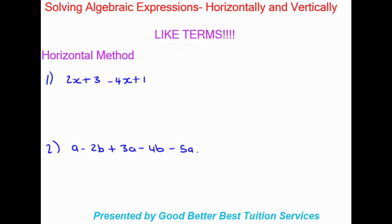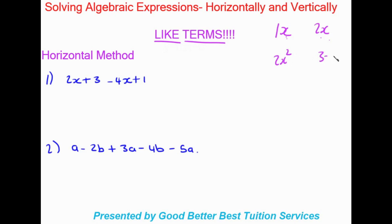A very important thing to note before we get started with solving algebraic expressions is like terms. Like terms are those terms that are structured exactly the same. If I had x and 2x, these are like terms because they both have x. Similarly, 2x² and 3x² are both x squared, so they are like terms.